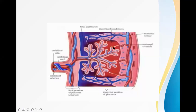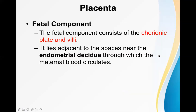There are lots of maternal blood vessels and lots of fetal capillaries inside the placenta. The fetal part of the placenta is formed by chorion frondosum, and the maternal part is formed by decidua basalis. The fetal component consists of the chorionic plate and villi, and the umbilical cord is attached towards the fetal component. Maternal blood circulates through the endometrial decidua adjacent to this space.